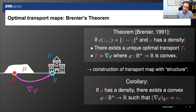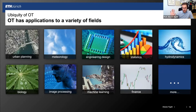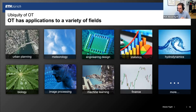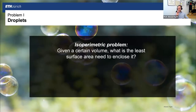Optimal transport is really ubiquitous by now. There are obvious applications like urban planning — it comes as a natural problem of allocation of resources. But there are applications that are perhaps more surprising. There are applications in meteorology, which I'll discuss. It has been used in image processing very naturally. And right now in machine learning, it has become a more and more important tool, and I think it's just the beginning of that.